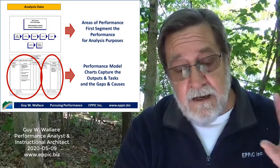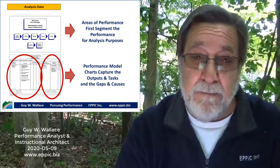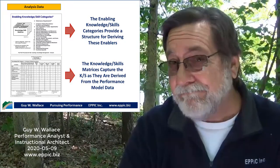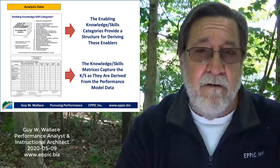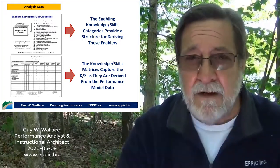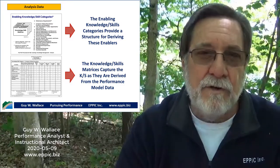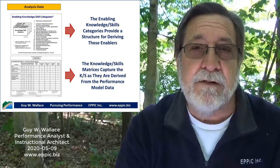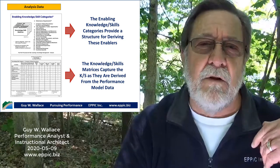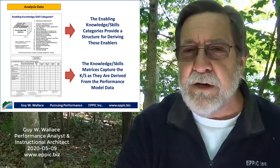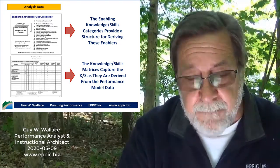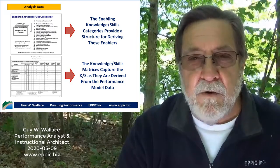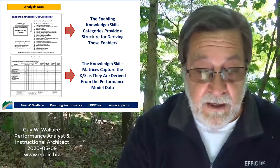The performance data feeds the lesson mapping process. But first, we use the performance data to systematically derive the enabling knowledge and skills. I have 17 categories of enabling knowledge and skills — covered in another video in this series and in my books. We use these 17 categories to systematically look at the performance and tease out what the enabling knowledge and skills are in each category: laws and regulations, tools and equipment, interpersonal skills, and all the rest. That data is captured on knowledge and skill matrices on flip charts in front of the room, posted on the wall for continuous reference.